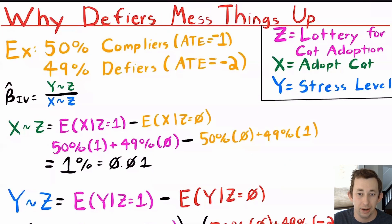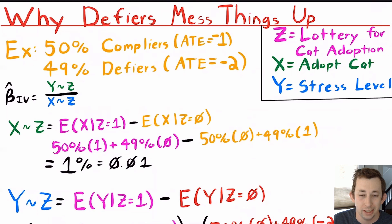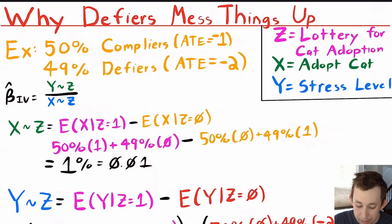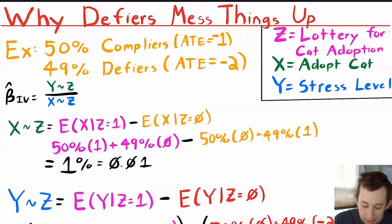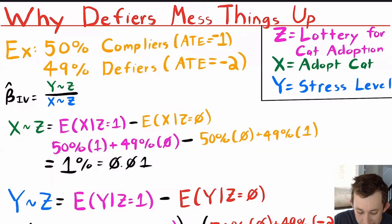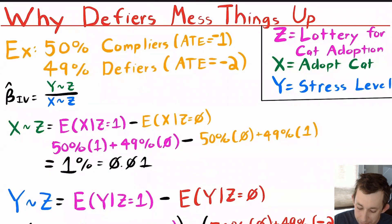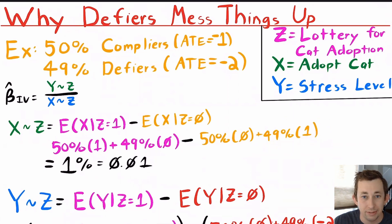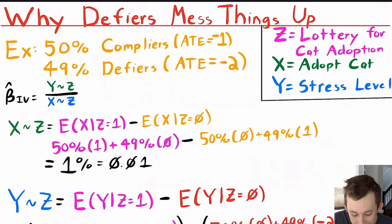Now let's introduce some defiers and see how they distort the estimate. The only people whose X changes based on Z are compliers and defiers. Suppose 50% of people are compliers with an average treatment effect of −1, and 49% are defiers with an average treatment effect of −2. The IV estimate is the effect of Z on Y divided by the effect of Z on X. The effect of Z on X is the average X given Z=1 minus average X given Z=0. With Z=1, 50% of compliers take treatment; with Z=0, 49% of defiers take treatment. The difference is only 0.01.